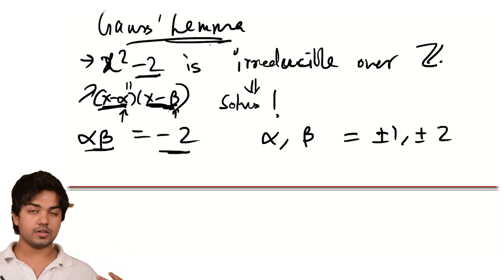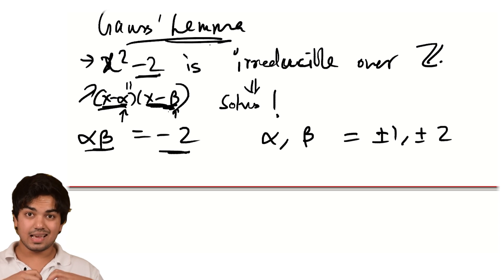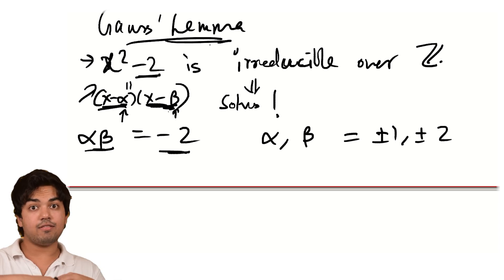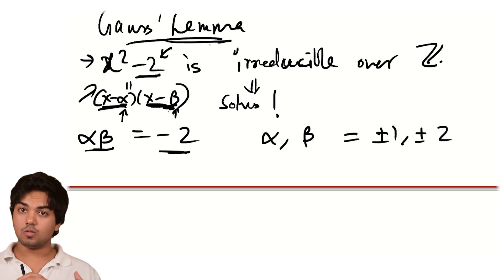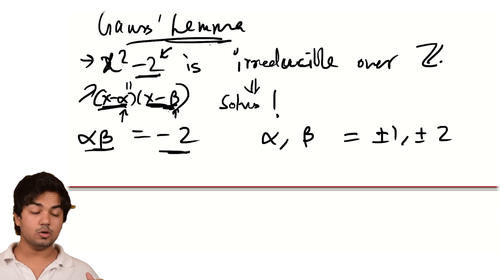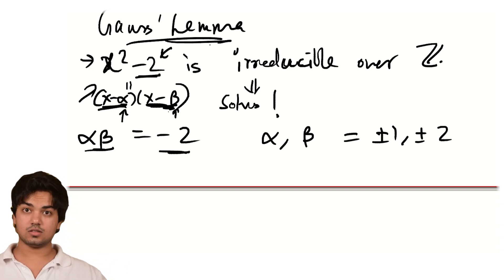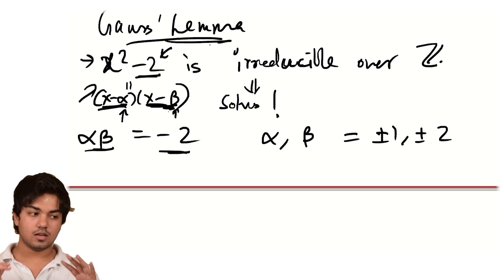Root 2 is exactly the number we define to be the solution to x squared minus 2, as I've spoken about in an earlier video. So there's no logical misstep — root 2 is the thing that solves this equation and no rational thing solves it, hence root 2 is irrational. I hope you have some appreciation for this incredible result, Gauss's lemma, because we got such a nice and very direct proof of the irrationality of root 2. Thank you very much for watching. Bye bye.